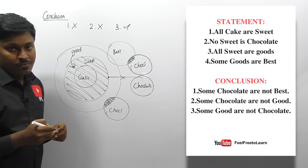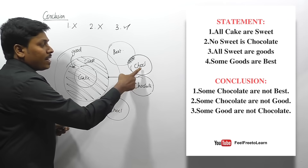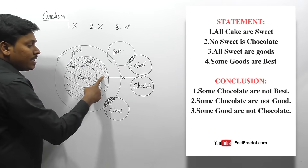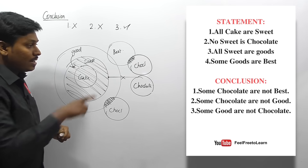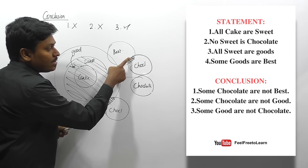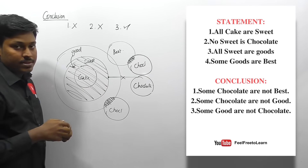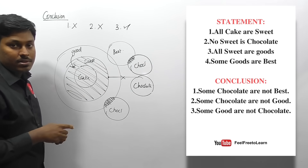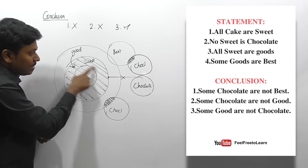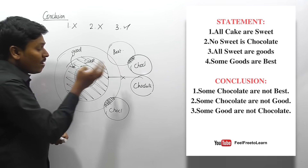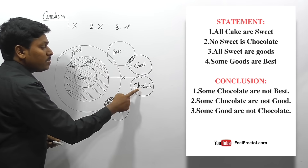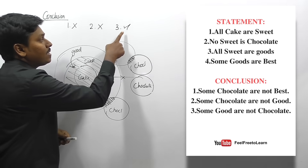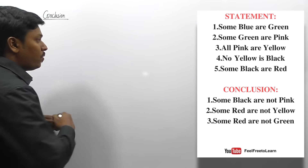Conclusion three: 'some goods are not chocolate.' Some good will be a complete region. They say this region is not chocolate — that is exactly correct because we already know no sweet is chocolate. There is no possible connection between sweet and chocolate, so some good (this region) is definitely not chocolate. Conclusion three follows. Final answer: conclusion three alone follows.